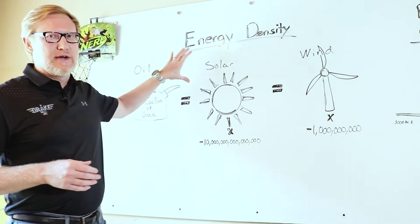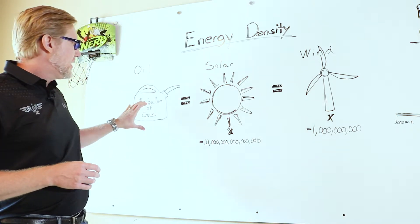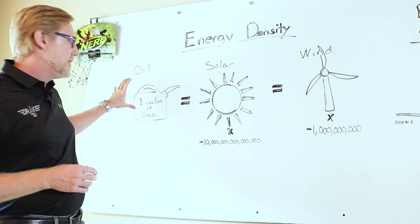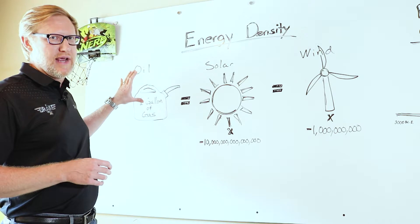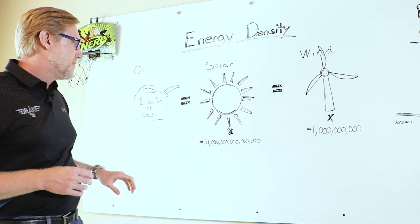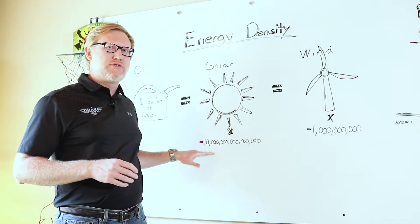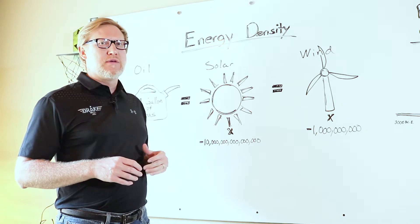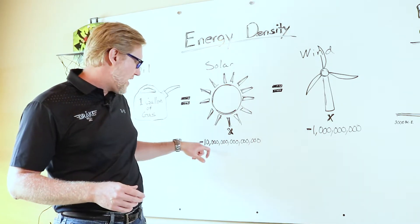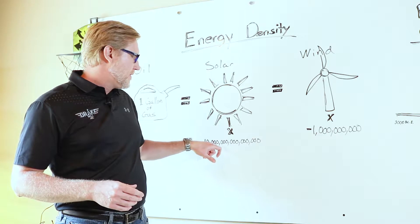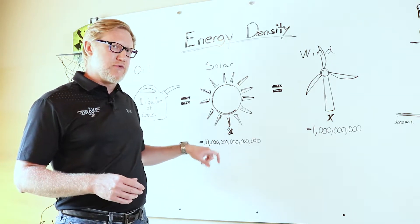So let's talk about energy density first. Energy in a gallon of oil or a gallon of gasoline is about 10 quadrillion times more dense than solar energy. So that's 10 with 15 zeros behind it.